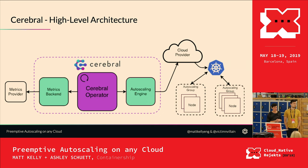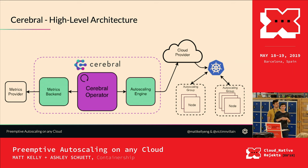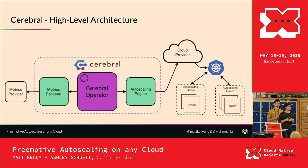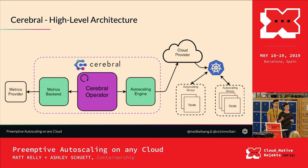At a high level, Cerebral's architecture — going from right to left — has autoscaling groups, which is how an operator groups together nodes in their Kubernetes cluster. This doesn't necessarily need to match how they're grouped by the cloud provider. Cerebral talks to both Kubernetes and to the cloud provider, and has an autoscaling engine that talks to the cloud provider to make scale-up and scale-down decisions.